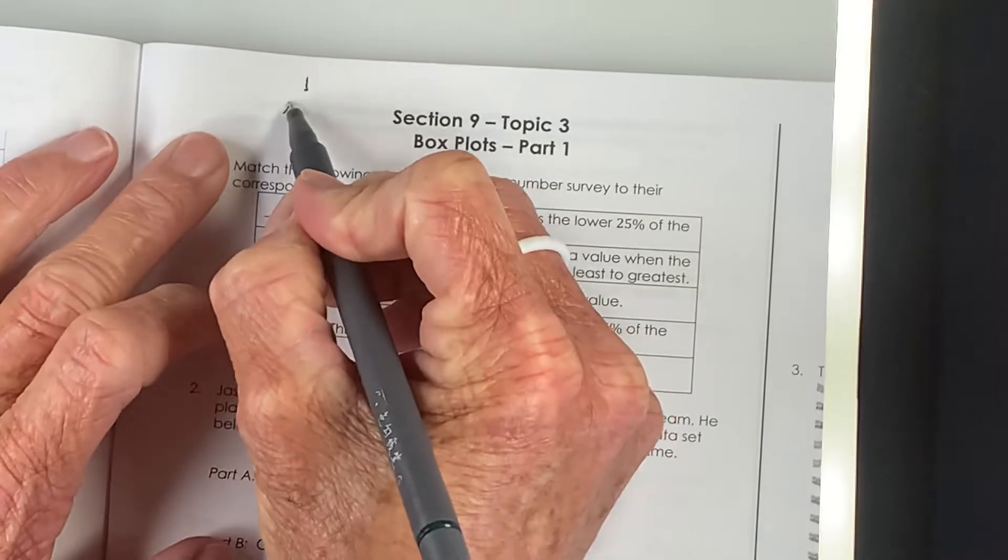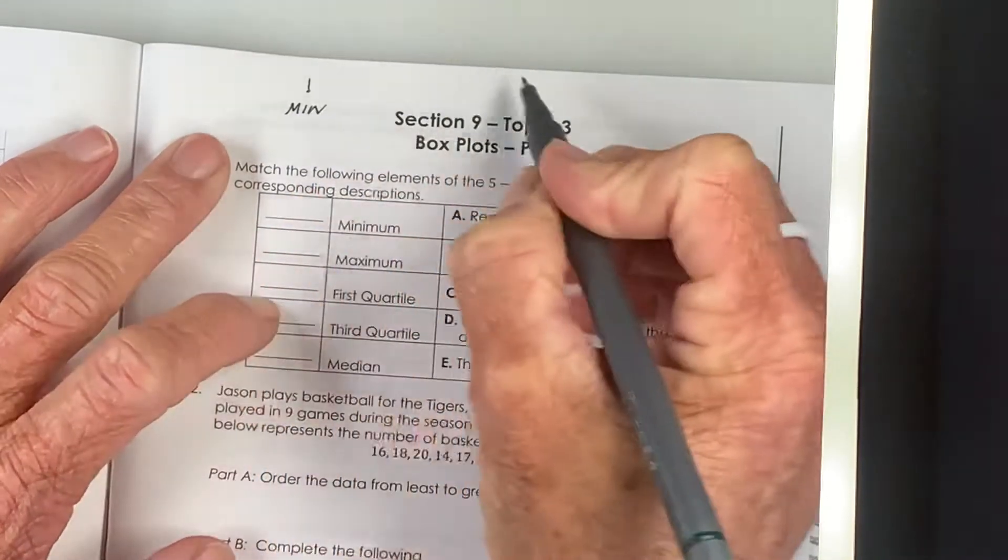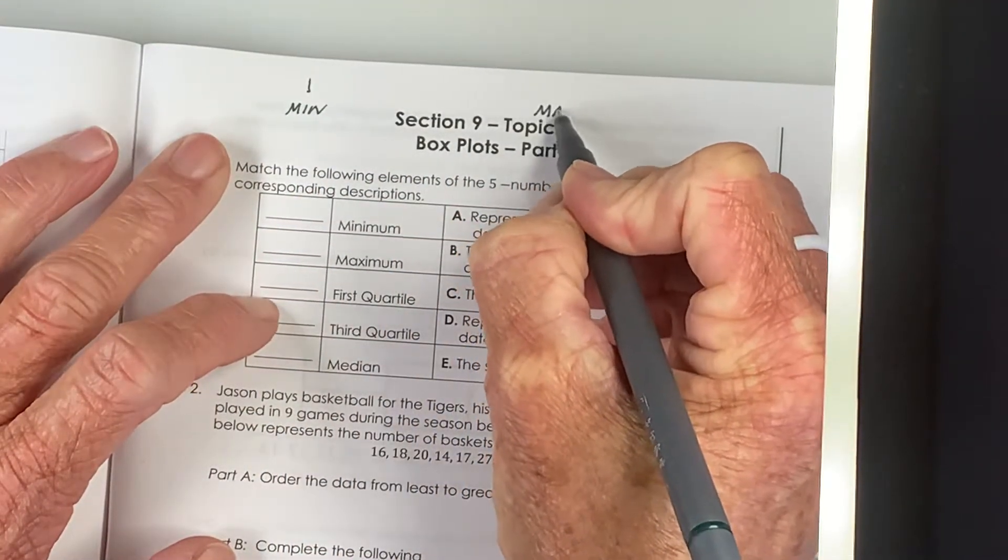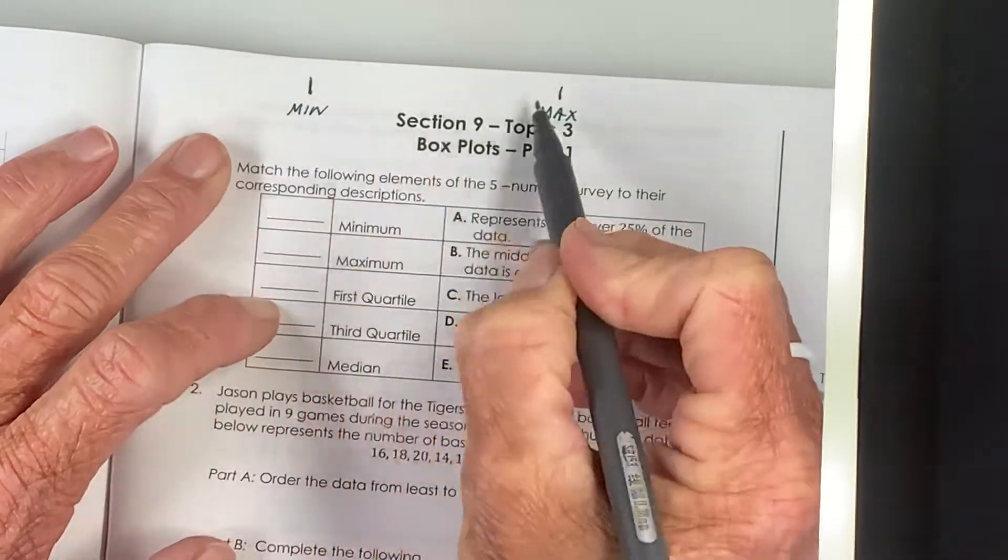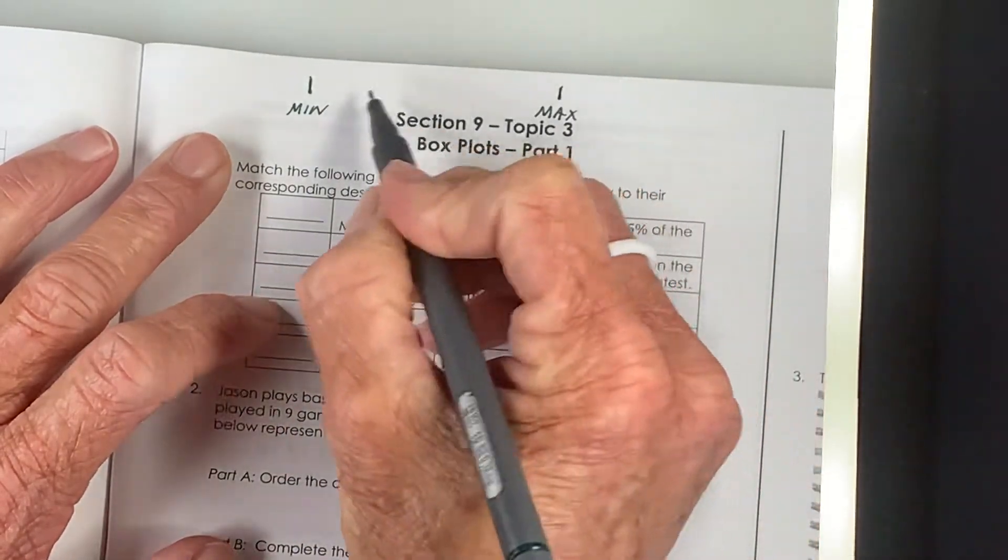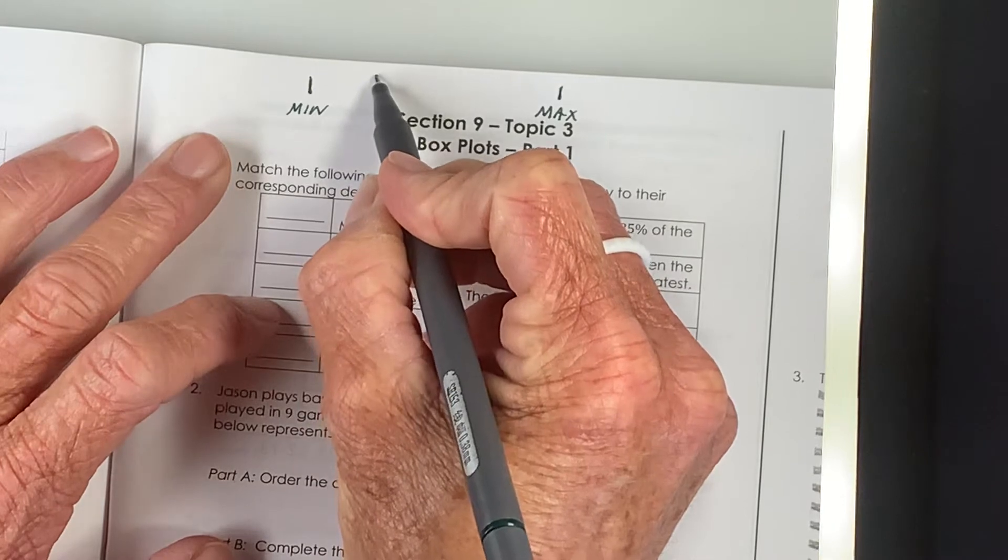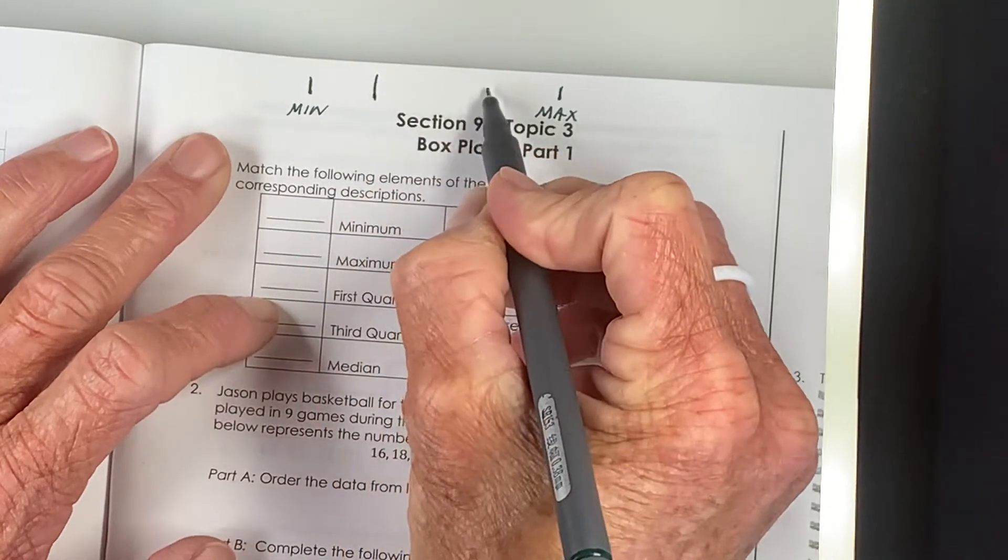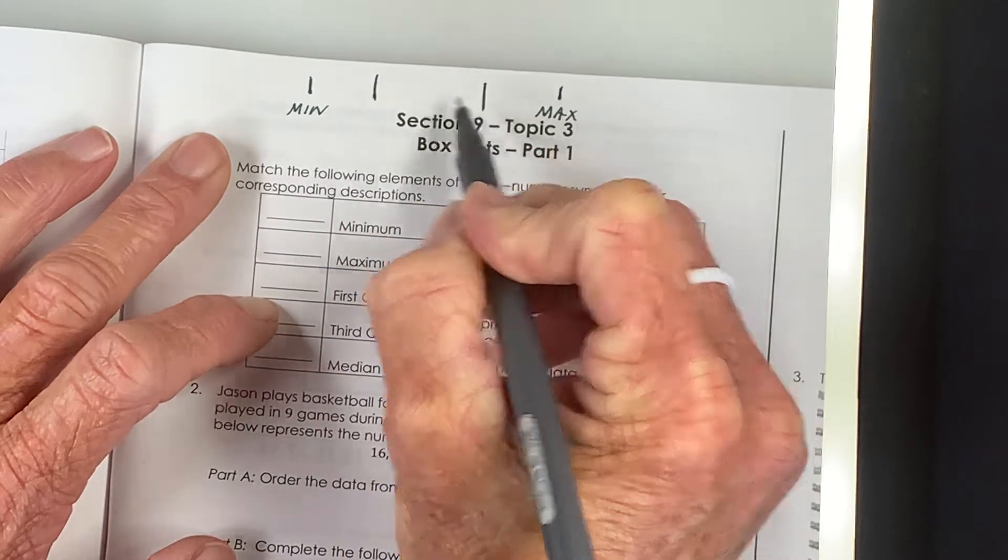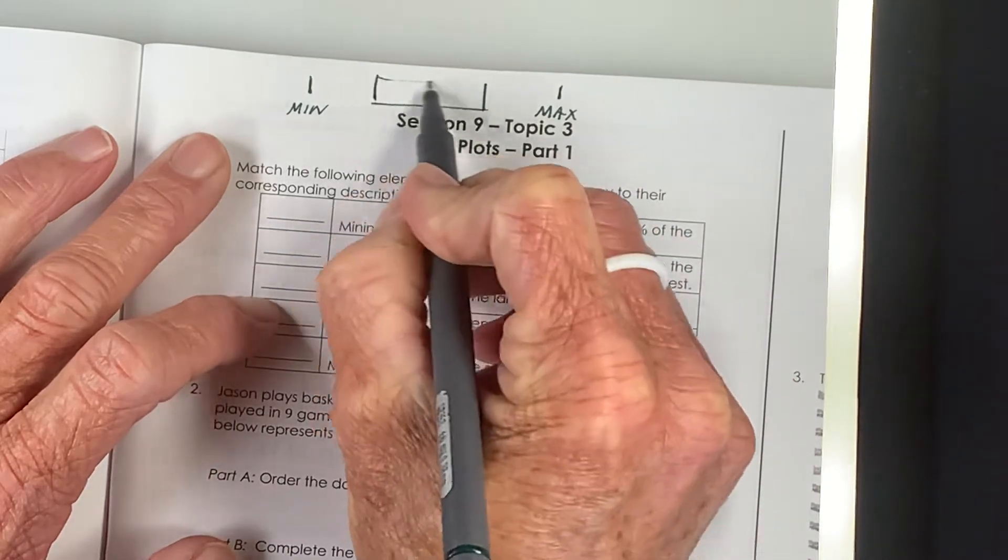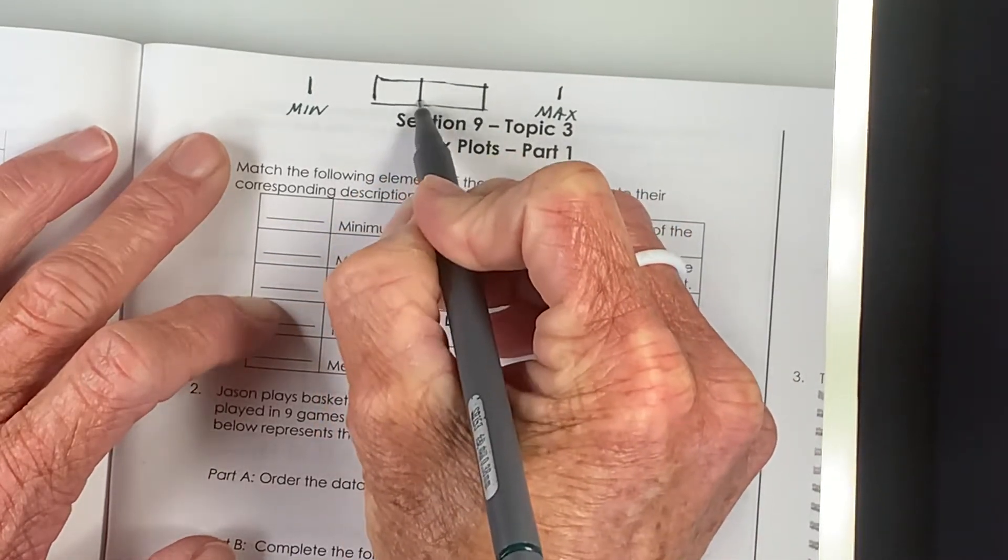The minimum value and the maximum value are the easiest to find in the data set and they're the lower ends of our box plots. There are three other important numbers: the two numbers that form the sides of the box and then the number that is somewhere inside of the box.